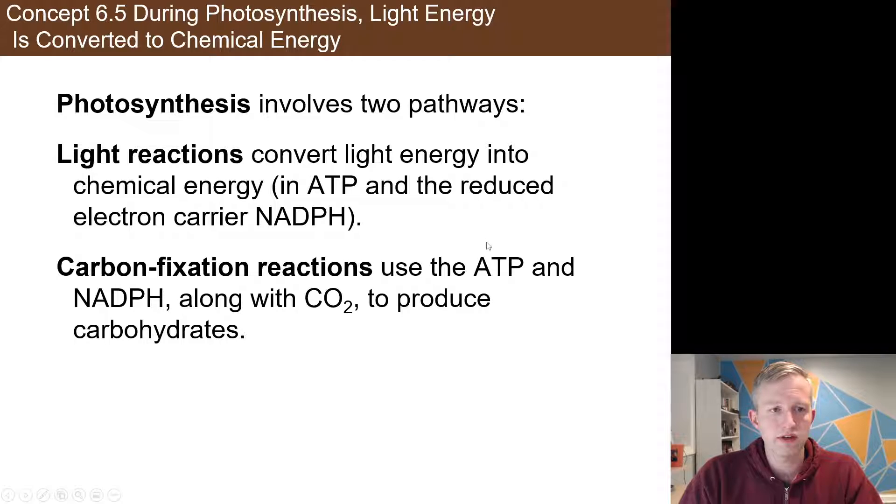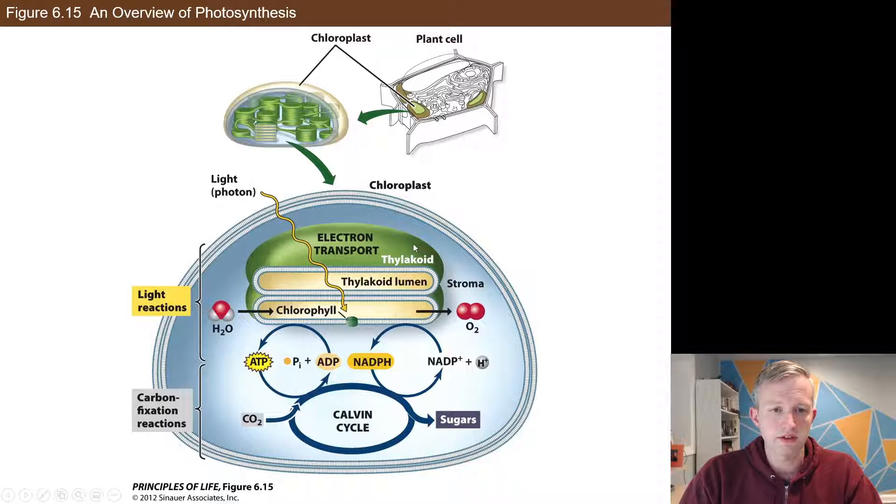So for photosynthesis, it's broken down into two sections, light-dependent and then what we call the Calvin cycle, or sometimes you hear it referred to as the light-independent side of photosynthesis. All of this is happening inside of the chloroplast, which is inside of plant cells. You have many chloroplasts inside of a plant cell, and then within that chloroplast, you have many of these thylakoids stacked up in what's called granum, or grana is the plural. And then the Calvin cycle is happening in the stroma of the chloroplast, which is the cytoplasm region outside of the thylakoids.